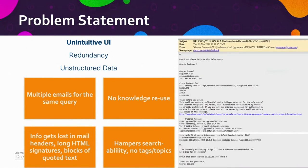As a quick summary of the problems: we have an unintuitive UI as shown earlier — it's difficult to go through previous email communications because of email headers, signatures, and unwanted data. There's redundancy — the same questions are asked repeatedly in multiple emails. The data in the database is unstructured, making it hard to identify what was asked and what was answered for a given issue.